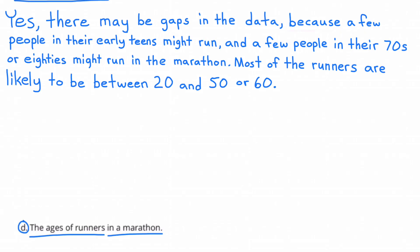Yes, there may be gaps in the data, because a few people in their early teens might run, and a few people in their 70s or 80s might run in the marathon. Most of the runners are likely to be between 20 and 50 or 60.